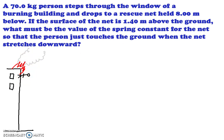He is dropping to a rescue net held 8 meters below. Okay, now the net is 8 meters below, but if you notice it says the surface of the net. So the net is actually above the ground. So the ground is here, but the net, let's just say the net is going to be something like here. So let's just draw the net. It's probably going to be like a little circle.